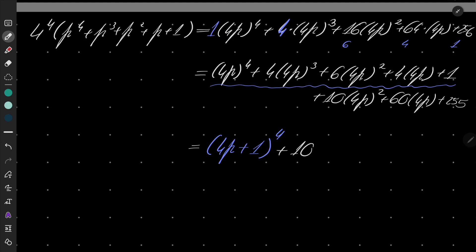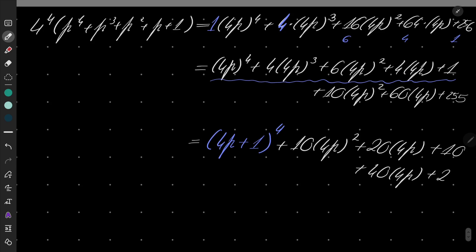Well, let's look. If I can write it like that, 10 times 4p squared plus 24p plus 10 plus 40 times 4p plus 245.